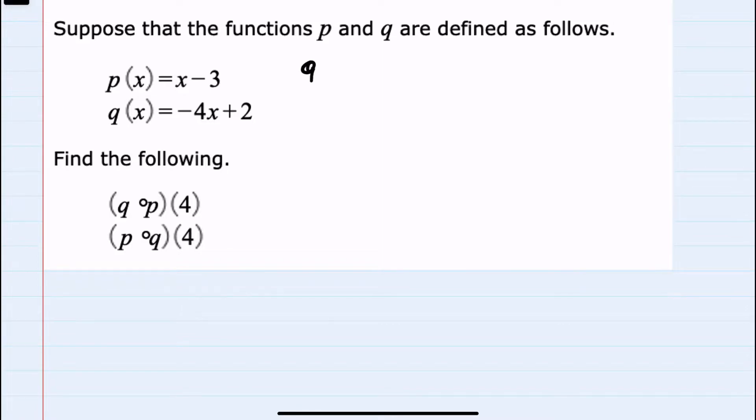So I will start with q of p of 4. Here, closest to the 4 is the p. So for our first step, we will take the p function and replace x with 4. So that would give us 4 minus 3, which we would simplify to 1, but then we have to take our q of 1.